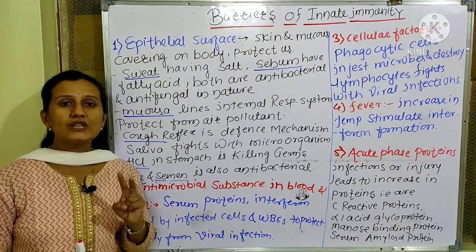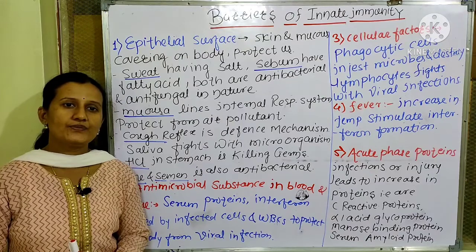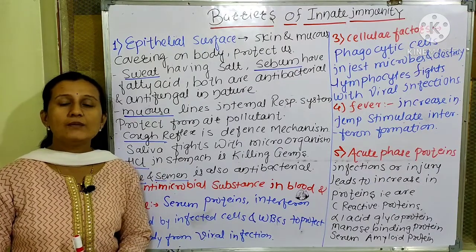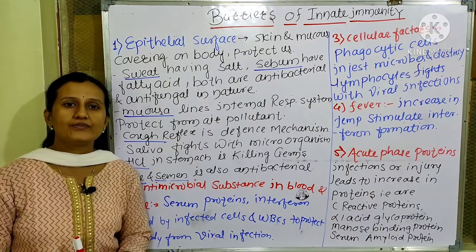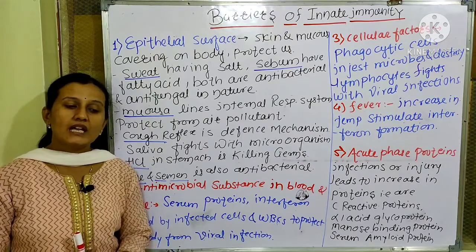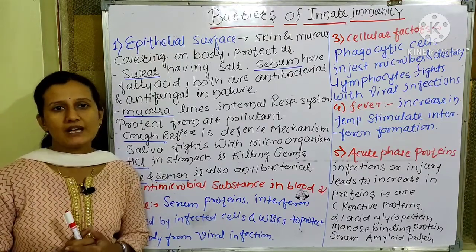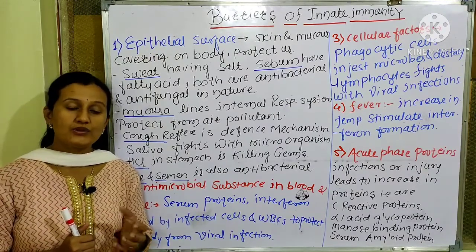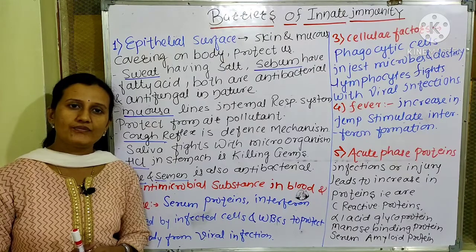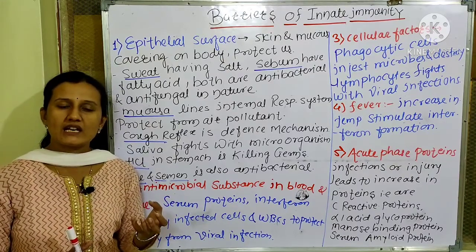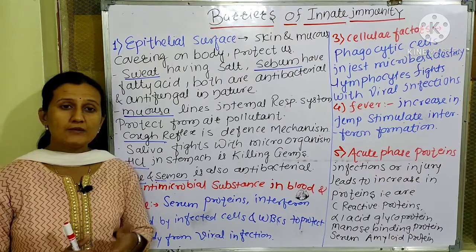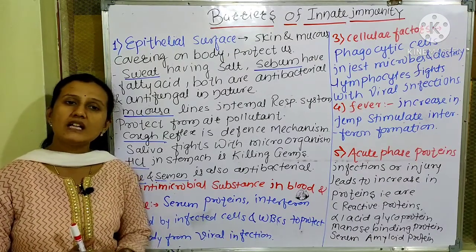We have seen the two types of immunity: innate immunity and acquired immunity. What is innate immunity? First, we will go through innate immunity — it is an inborn immunity. It is the immunity of an organism determined by its genetic makeup, by its genomic constitution. It is not affected by any microorganism attack.